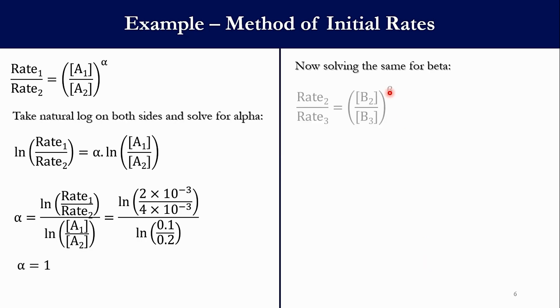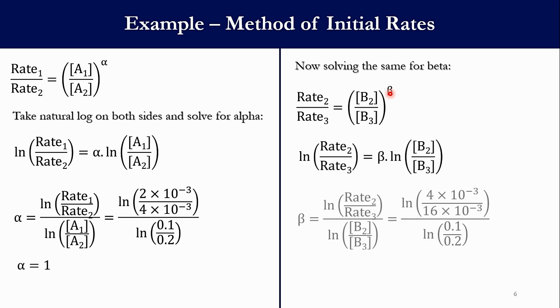Accordingly now solving the same for β: Rate₂/Rate₃ = ([B₂]/[B₃])^β. And I have told the reason: because the concentration of A was same in 2 and 3, so accordingly we will take it for easy solution. And taking natural log again the same way: β = ln(Rate₂/Rate₃) / ln([B₂]/[B₃]). So the value of Rate₂ is 4×10⁻³, Rate₃ is 16×10⁻³, [B₂] is 0.1 and [B₃] is 0.2. And accordingly we get β = 2.